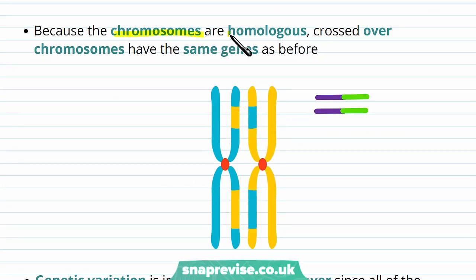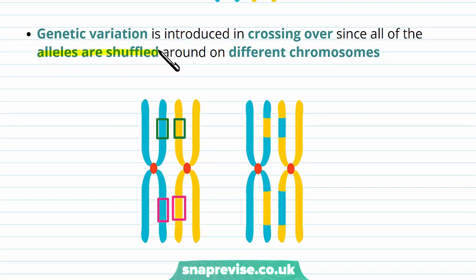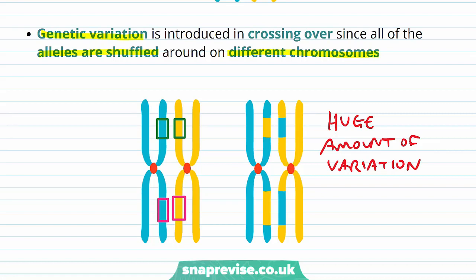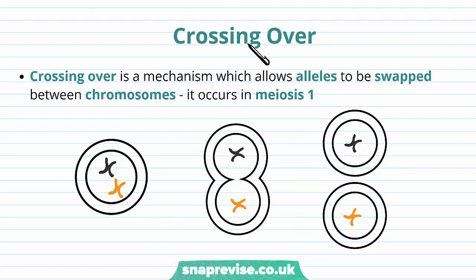Because the chromosomes are homologous, the crossed-over chromosomes have the same genes as before, but the alleles become shuffled, and this introduces genetic variation across lots of different chromosomes at lots of different genes and loci. Over the 23 pairs, this creates a huge amount of variation. Crossing over is an important mechanism in meiosis — it allows some alleles, or versions of genes, to be swapped between homologous chromosomes, and it occurs in meiosis 1.